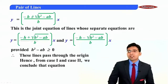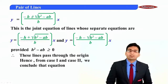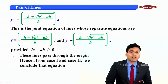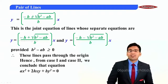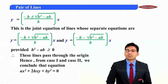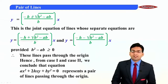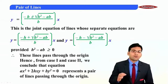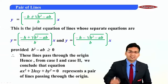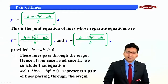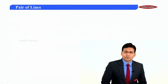From Case 1 and Case 2 we can conclude that the equation ax² + 2hxy + by² = 0 represents a pair of lines passing through the origin. Here we complete the proof.